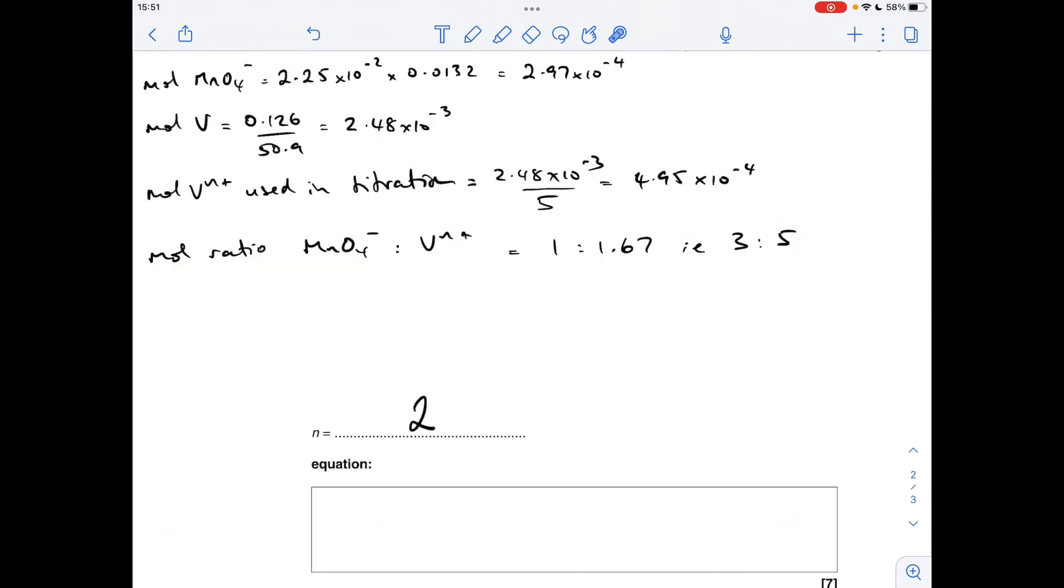So to come up with the overall equation, what we need to do now is write out the two half equations and then combine them to form the redox reaction. So we'll start with the vanadium one. So we know now that V²⁺ is going to VO₃⁻. We know that each vanadium is losing three electrons. So we need three electrons on that side.